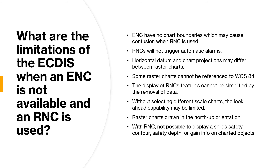You need to understand how a chart's horizontal datum relates to the datum of the position fixing system in use. If you are using WGS 84 in that area, any difference in position will be most noticeable at grid intersections and during route monitoring, so you must be very aware of this difference to know exactly where your ship is. Some raster charts cannot be referenced to WGS 84 at all, and in that case the ECDIS equipment should give a continuous indication of this inaccuracy so you are aware of the position error.